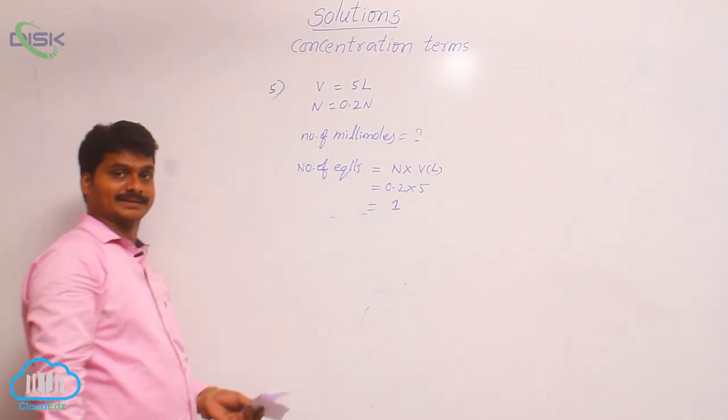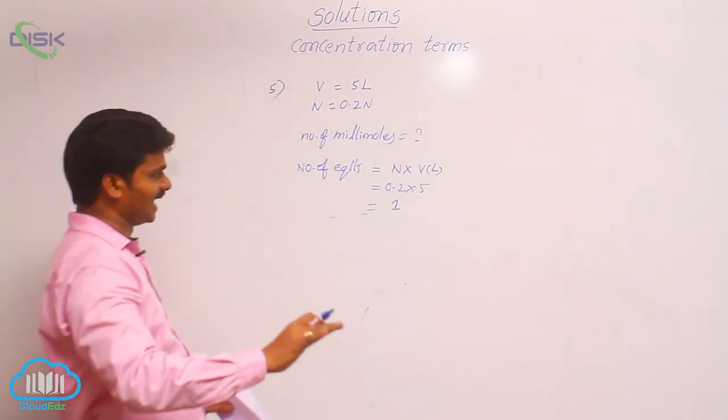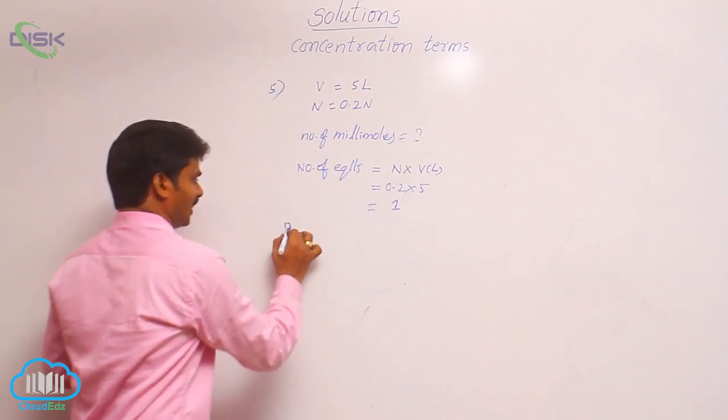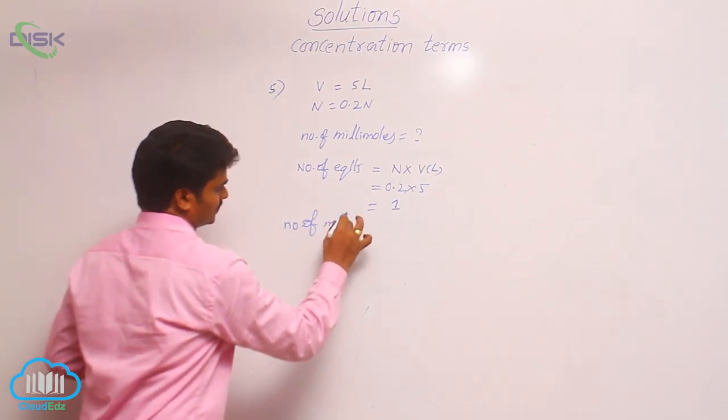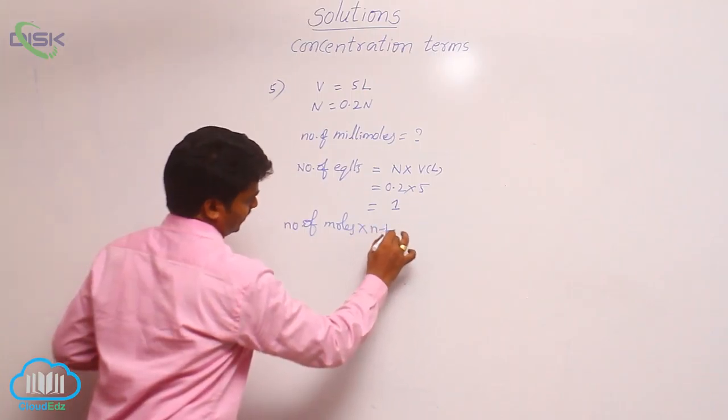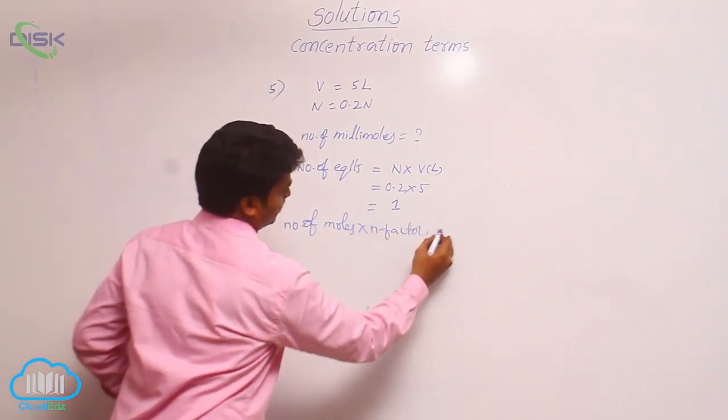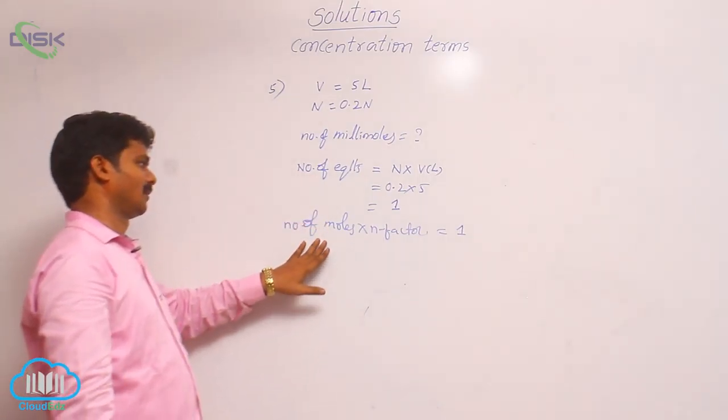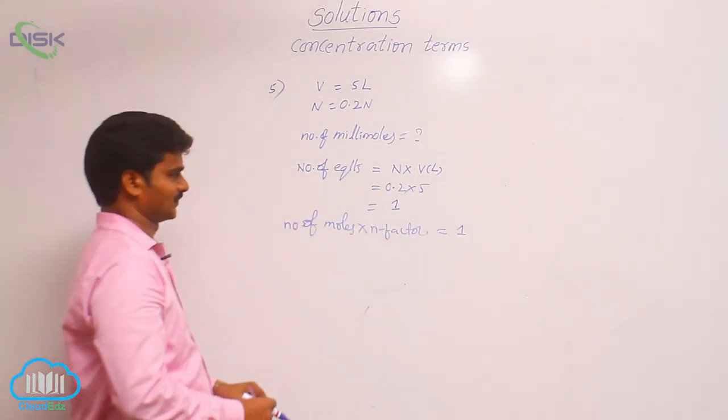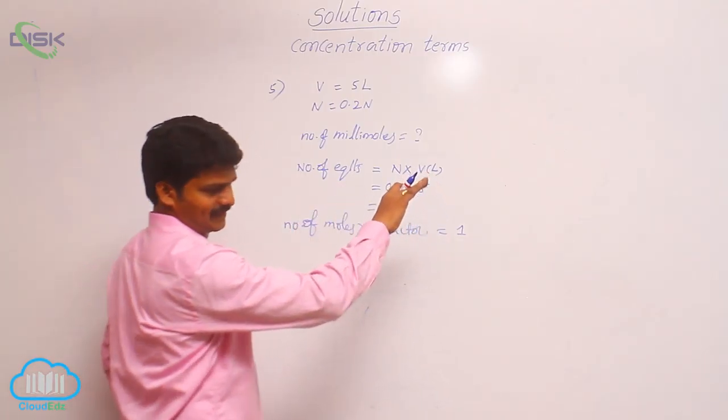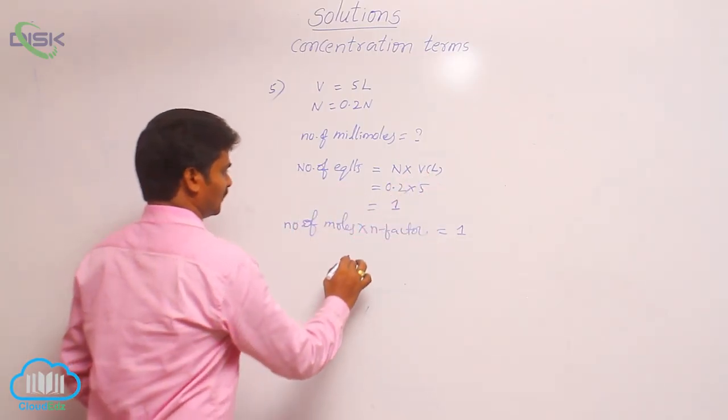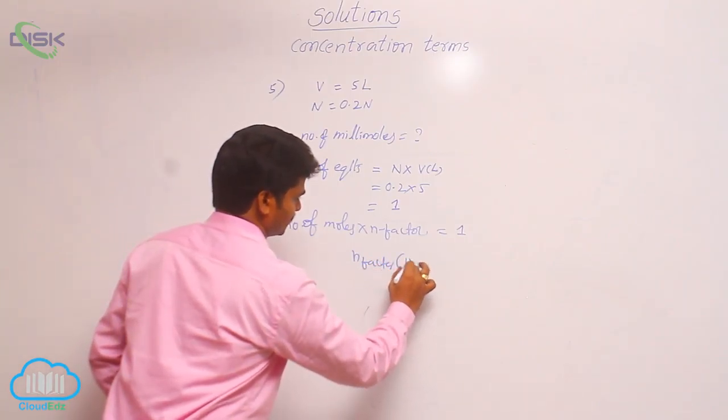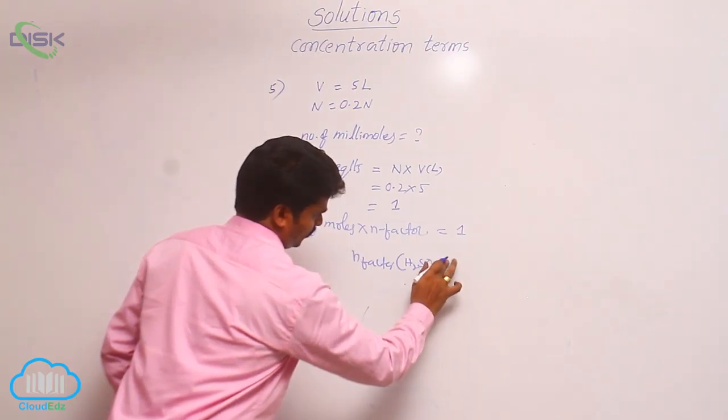Number of equivalence and number of moles, how are they related? Number of equivalence is equal to number of moles into n-factor is equal to 1. In place of number of equivalence, I wrote number of moles into n-factor. Take n-factor to that side. What is n-factor for H2SO4? n-factor for H2SO4 is equal to 2.